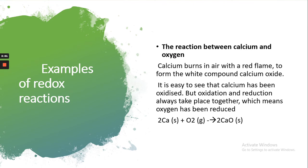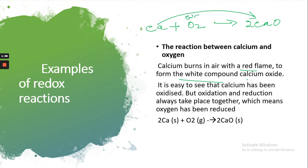Calcium burns in air with a red flame to form the white compound calcium oxide. Here calcium is oxidized into calcium oxide, and at the same time oxygen is reduced into calcium oxide. So we can say both oxidation and reduction occur together.